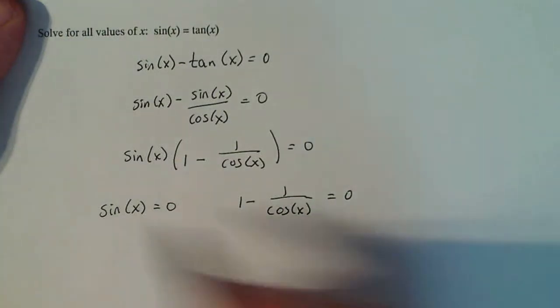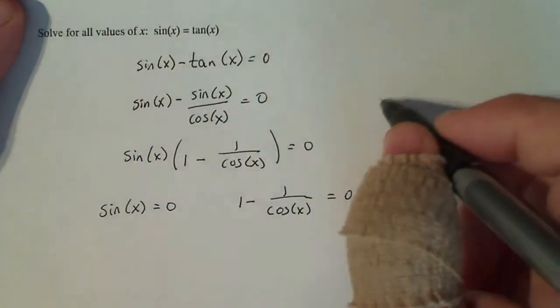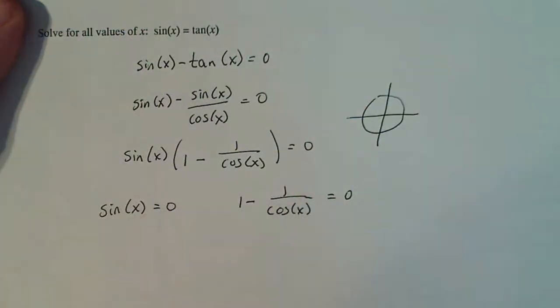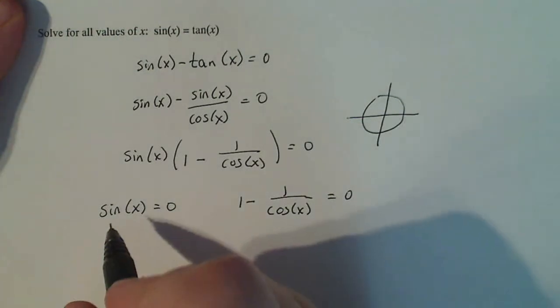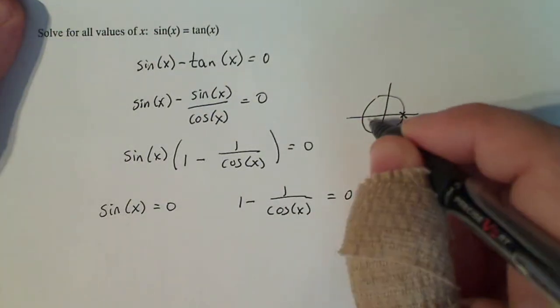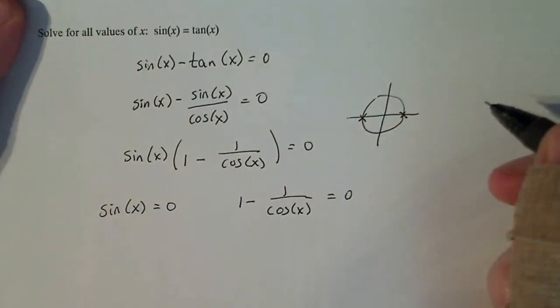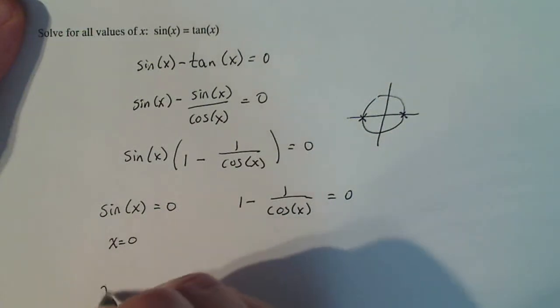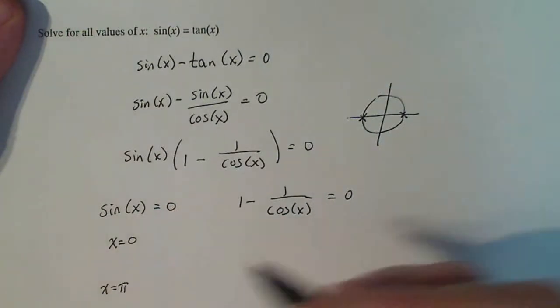So now I have to think about sine of x equals zero. Let me look at my unit circle. Zero is standard. It's a number that shows up on the points on the edge of the unit circle. And in the first rotation, the place where sine x equals zero is here at zero radians and pi radians. So x equals zero radians and x equals pi radians.